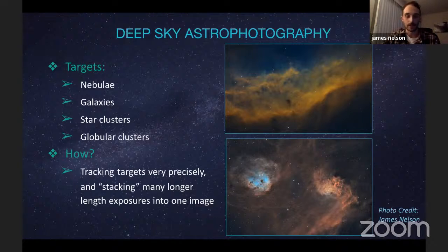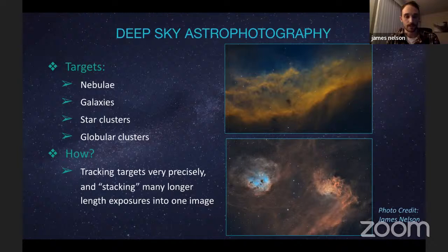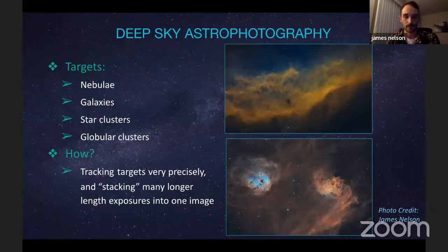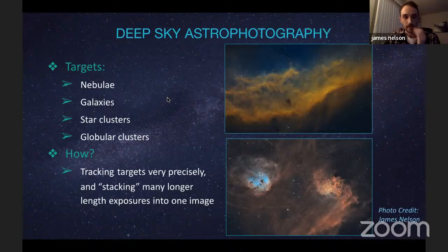How do we do deep sky astrophotography? Bill briefly touched on the idea of stacking — taking many different long exposures, then putting them all together. It helps eliminate noise in each shot: shot noise, thermal shot noise, and any pattern noise the sensor might have. Stacking strengthens the signal of your images to get impressive results. Even though each shot looks rough, combined they produce something beautiful.